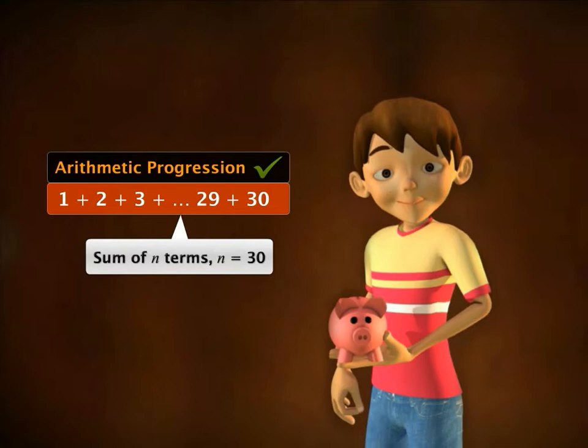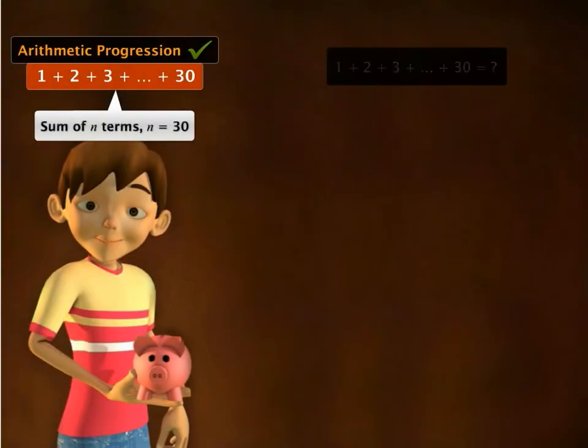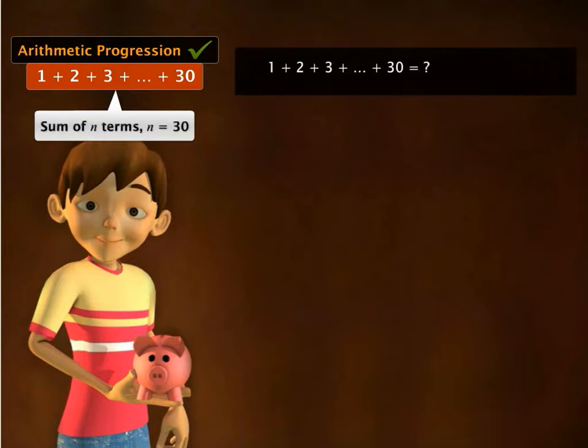Let's learn how to find the sum of first n terms of an arithmetic progression. To find the sum of 30 terms of arithmetic progression, let's first denote the sum by s subscript 30, read simply as s 30.